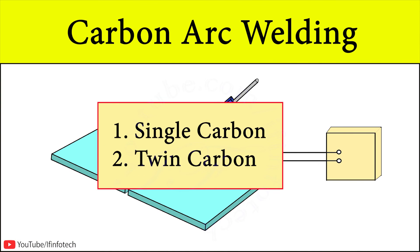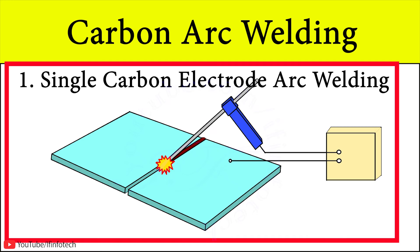Carbon arc welding process may be classified into two parts: single carbon electrode arc welding and twin carbon arc welding. In single carbon electrode arc welding process, the arc is initiated between the carbon electrode and workpiece by touching the electrode with the job.